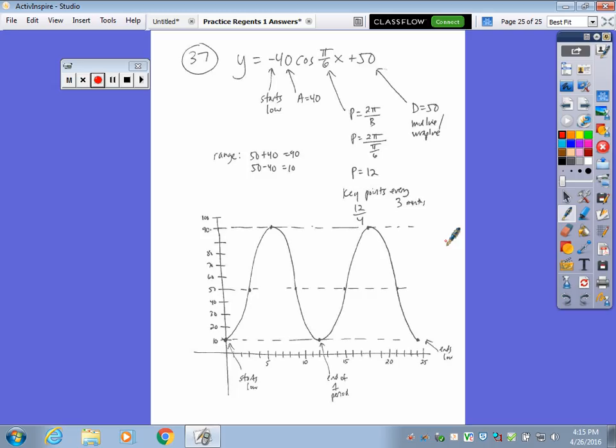So I sketched a graph here. I put a dotted line at 50. This is the midline. It starts low, ends low after 12 months. And then I did another period because it says in the directions, graph it from 0 to 24. So you're getting two whole periods there. And you make sure you show your five key points, the highs, the lows, and the crossings.